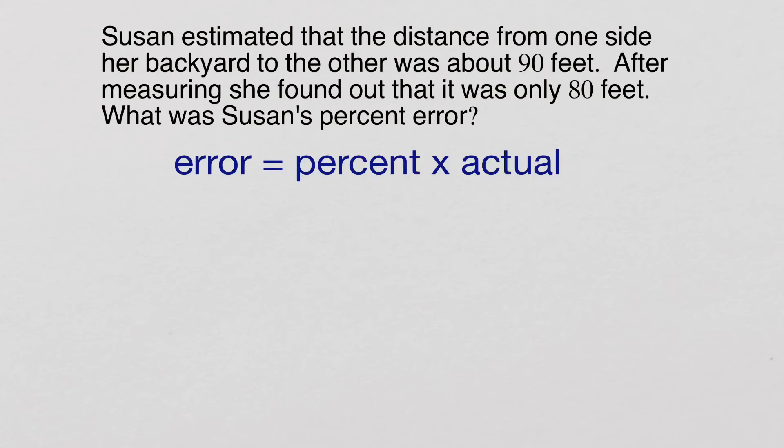Again, we're going to fill stuff in, have one variable, and then solve it. So we're going to go ahead. We're going to say the actual distance from one side of her yard to the other was 80 feet. We know that from the problem.